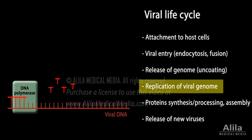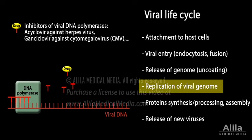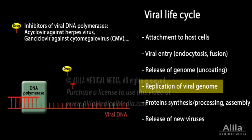Viruses with large DNA genomes usually encode their own DNA polymerase for DNA replication. Viral DNA polymerases are the target of many currently available antiviral drugs. Most of these drugs are nucleoside analogs that incorporate into the growing DNA and cause premature termination of viral DNA synthesis.